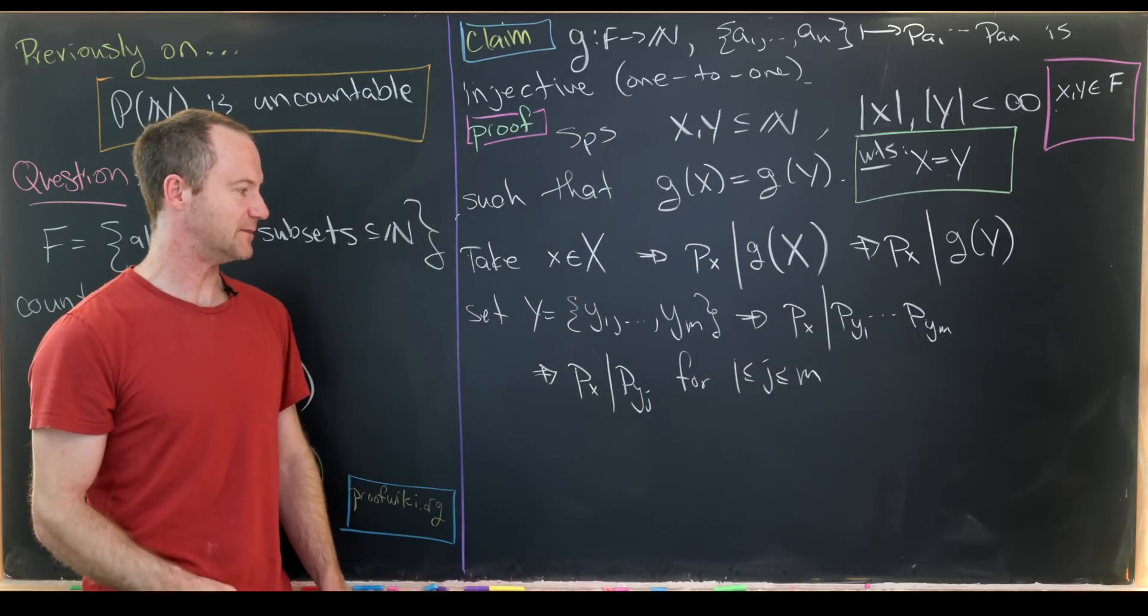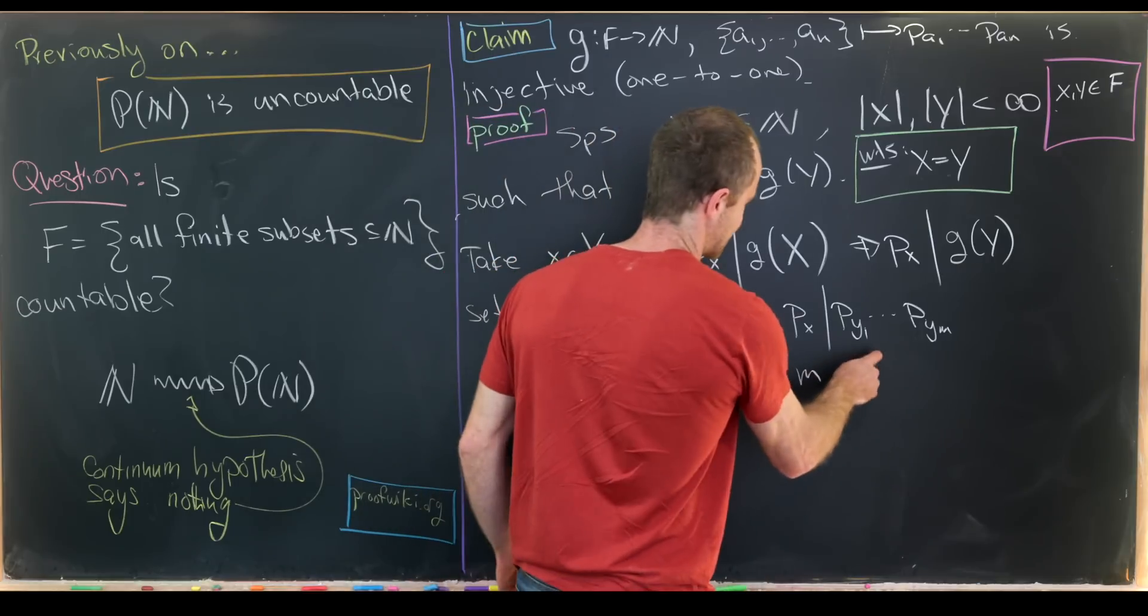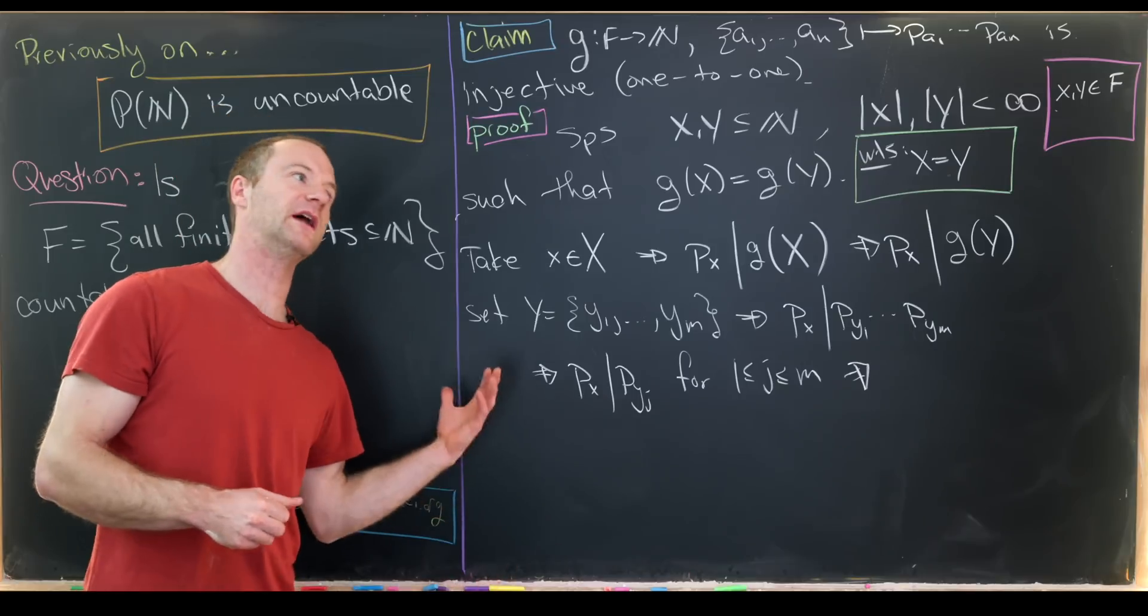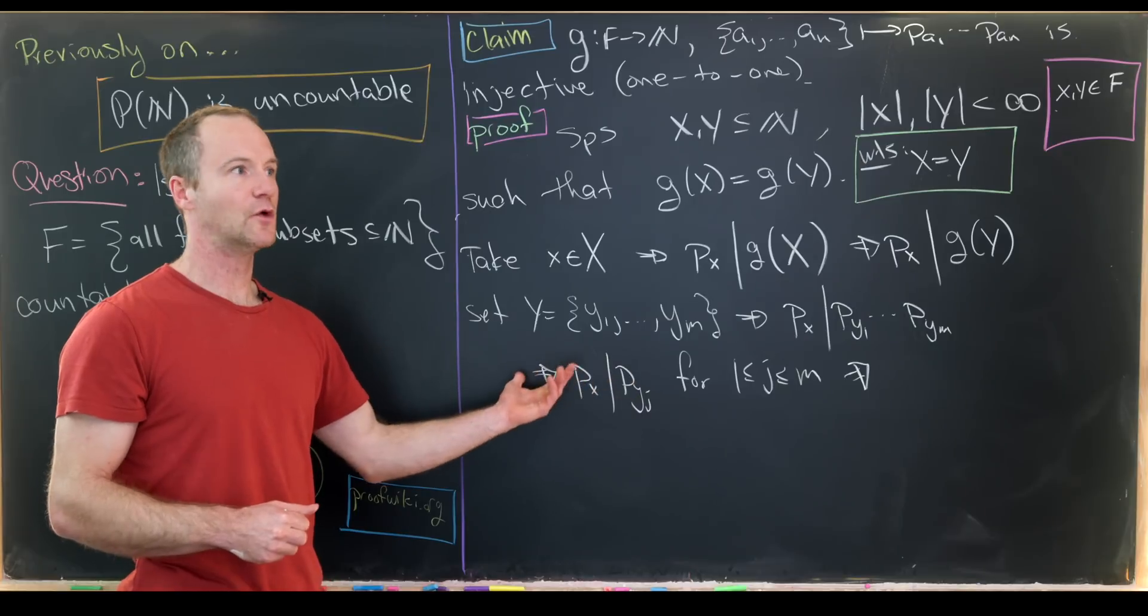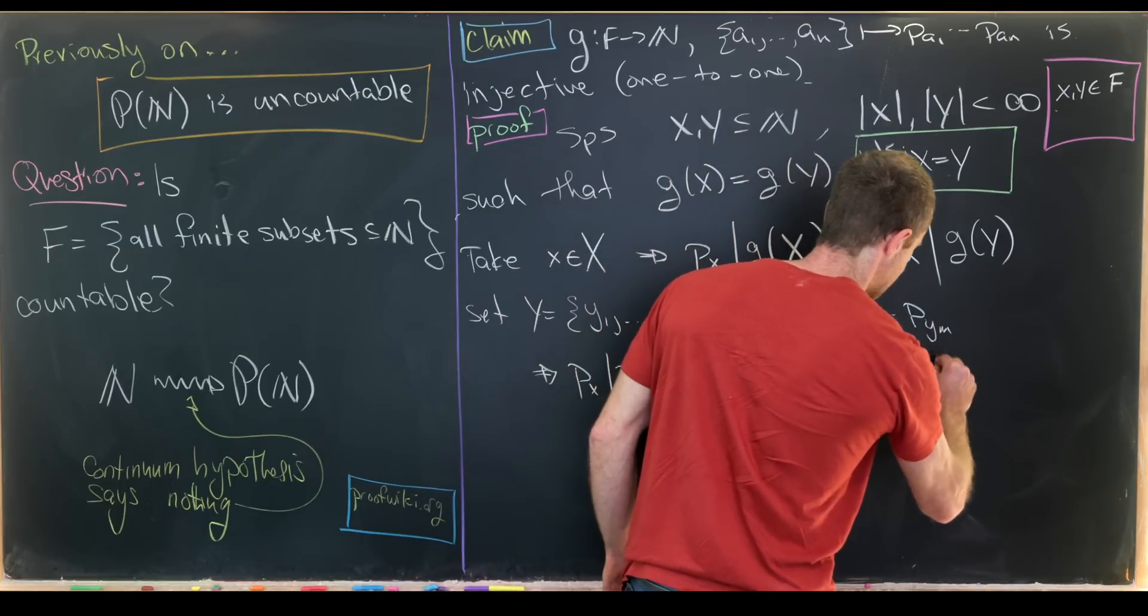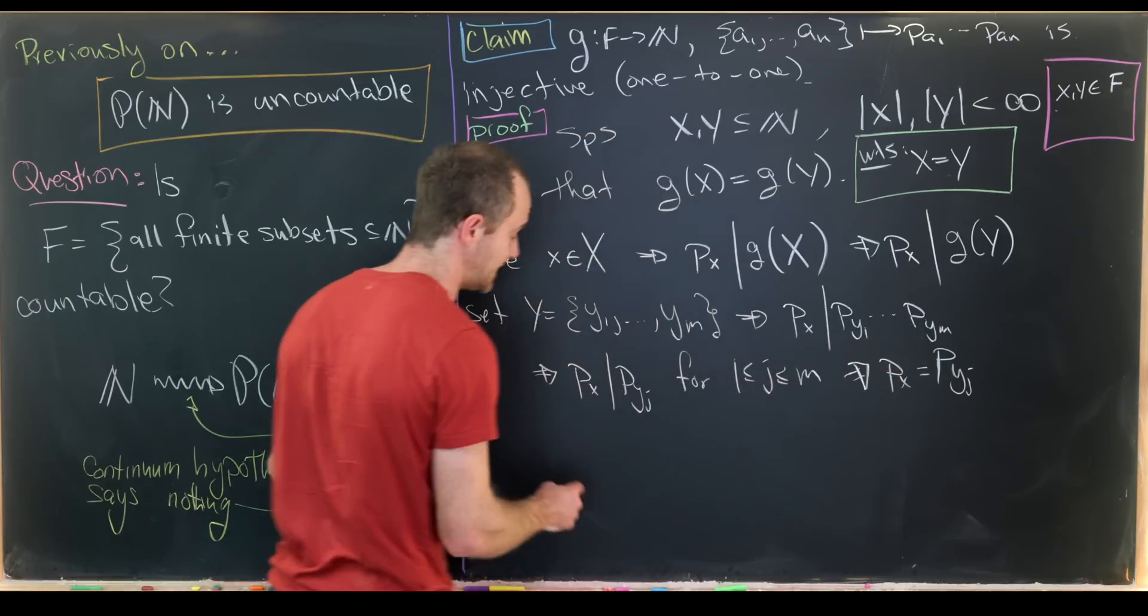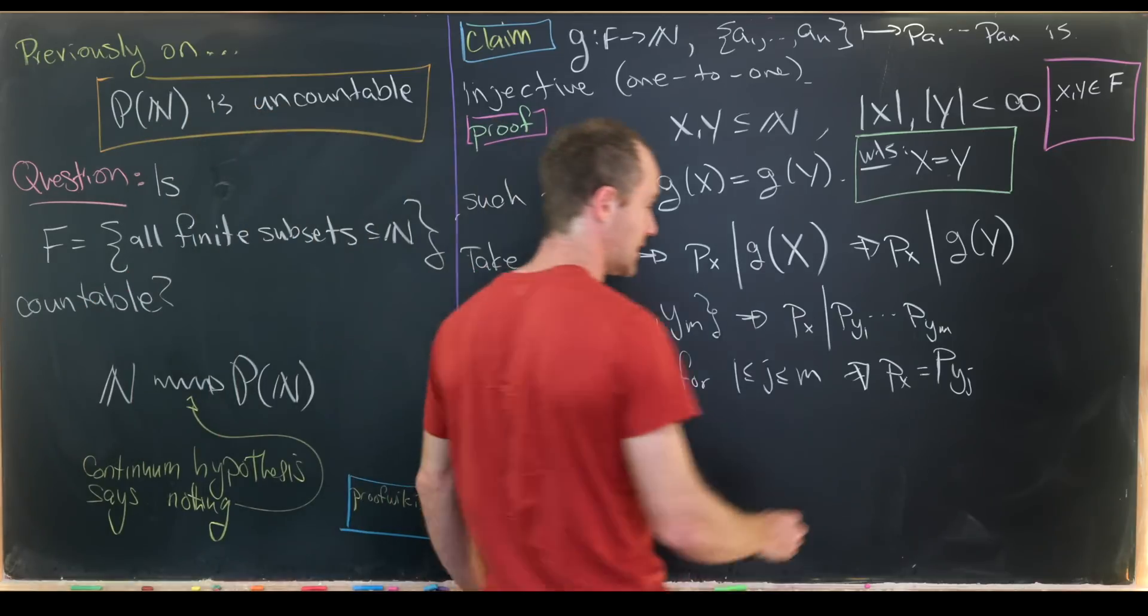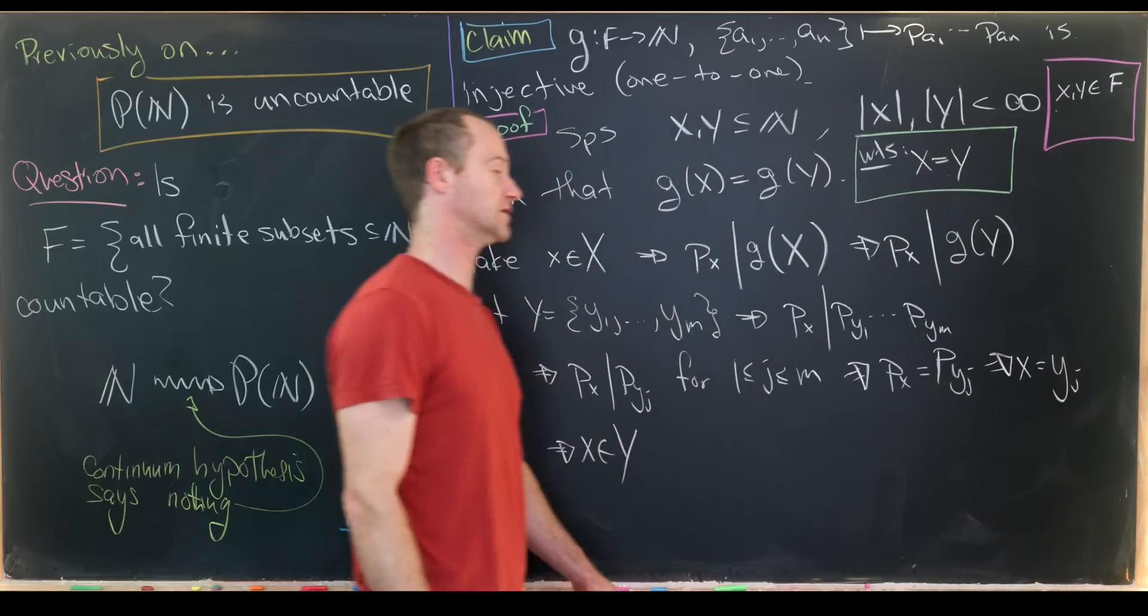If we have this divisibility condition on primes, that means we have equal primes. From the definition of a prime number, the only divisors are 1 and the prime itself. We have P_x is a divisor of this prime number. We do not take 1 to be prime, so these two prime numbers must be equal: P_x = P_{Y_J}. If P_x = P_{Y_J}, that means x is an element from our set Y.